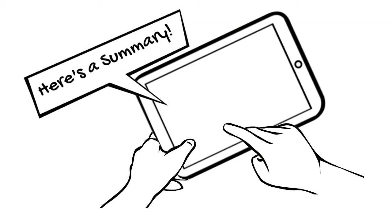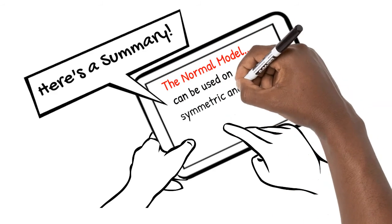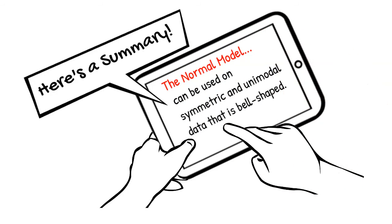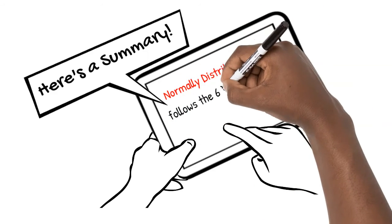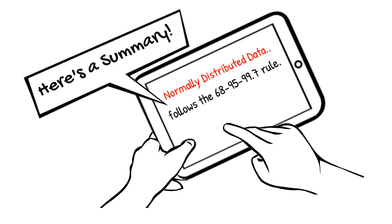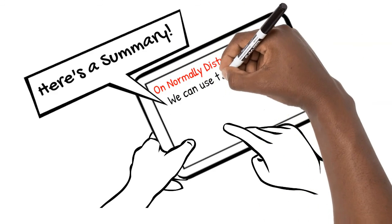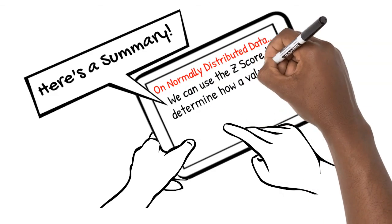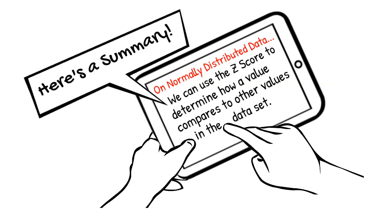Here's a summary of what we've learned. The normal model can be used on symmetric, unimodal data that is bell-shaped. Normally distributed data follows the 68-95-99.7 rule. On normally distributed data, we can use the z-score to determine how a value compares to other values in the dataset.